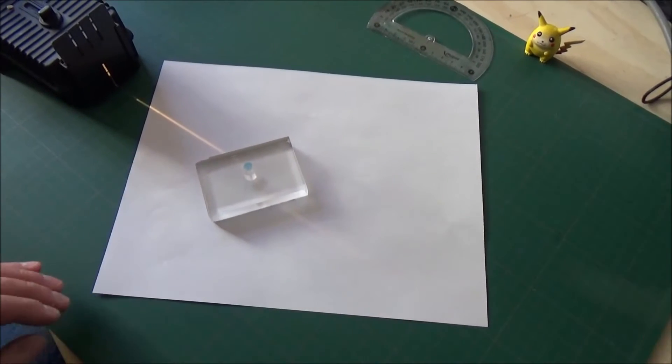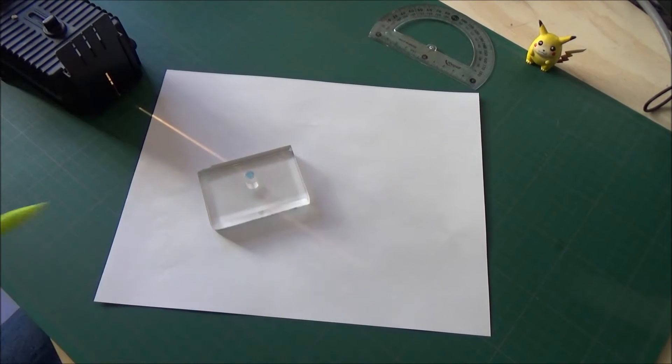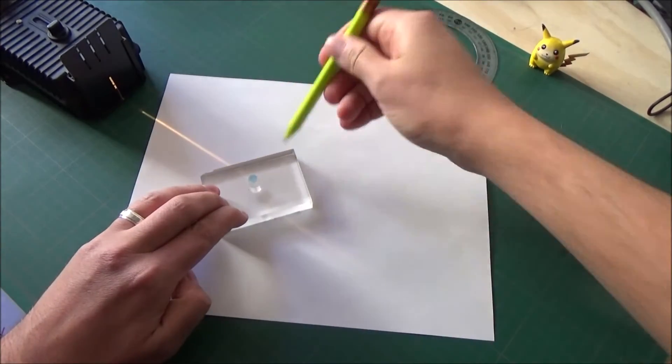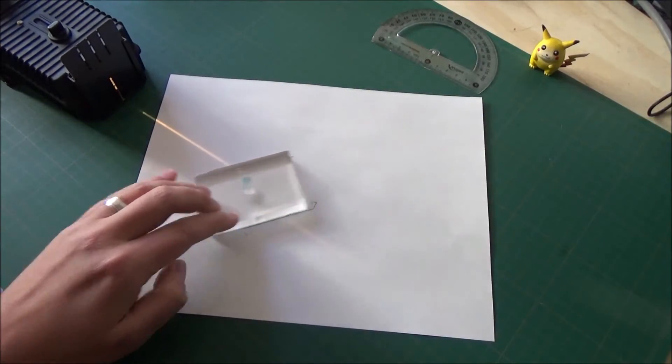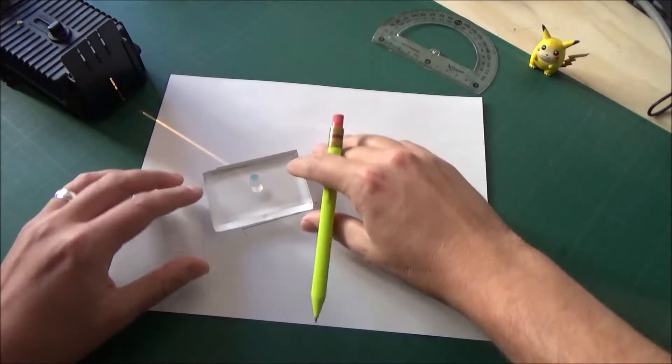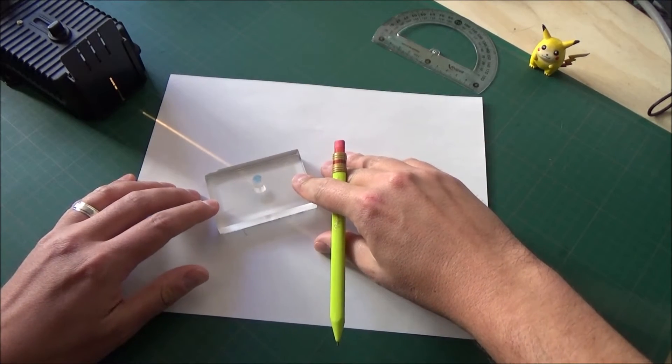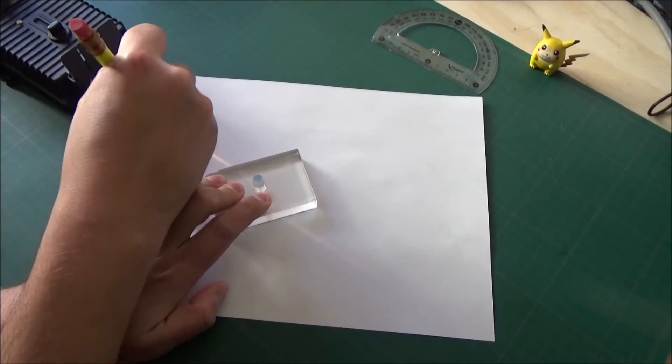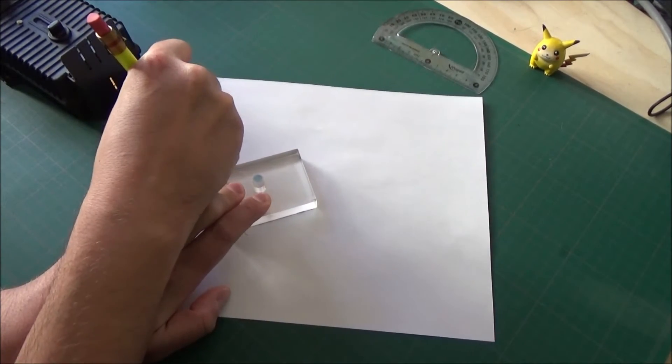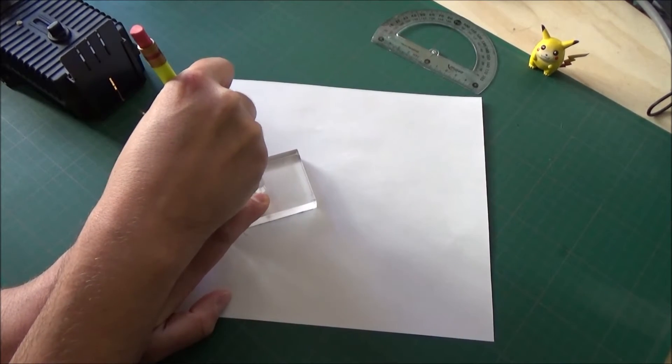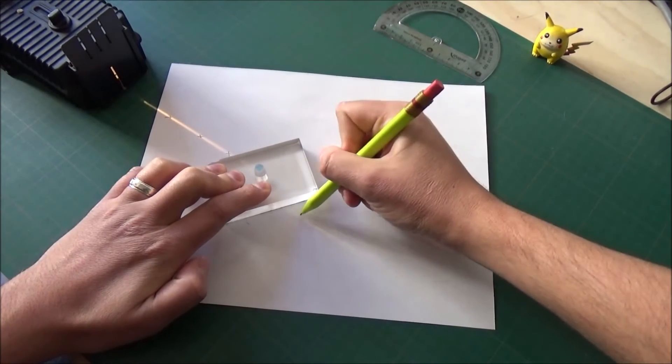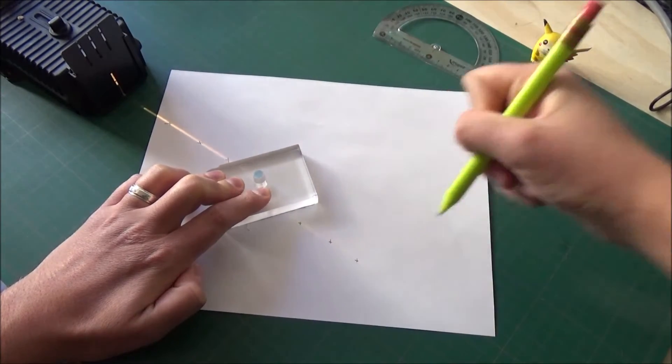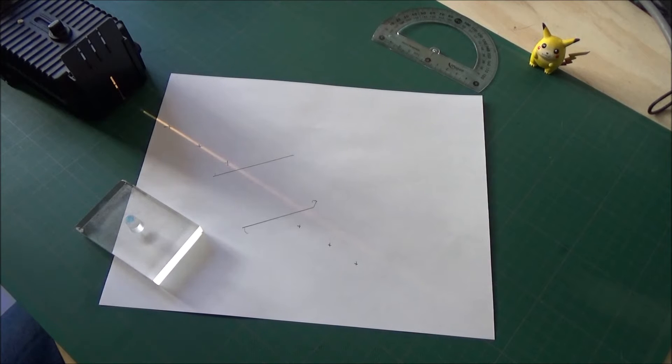We've got our ray box set up, and we've got our perspex at an angle to the ray, and you can see the ray just emerging there from the perspex. I'm going to draw two lines along the perspex in case I knock it, so I can put it back as precisely as possible, and then what I'm going to do is mark three crosses along the ray before it enters the perspex, and three crosses where it leaves the perspex.